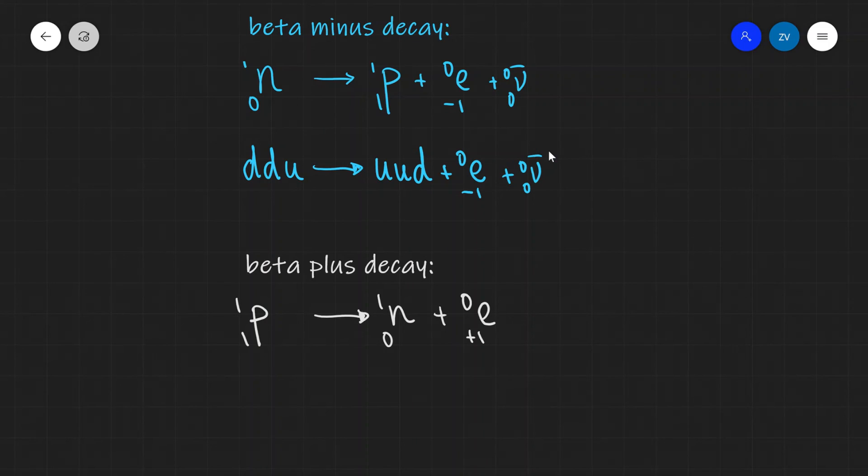And now we no longer get the anti-neutrino. You just get a neutrino over here on the right hand side. This is the beta plus decay.